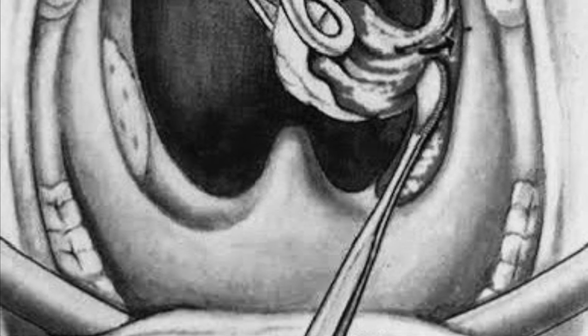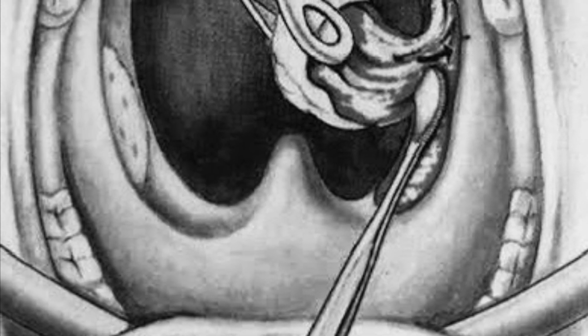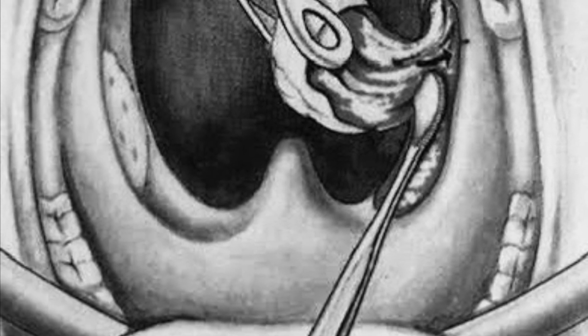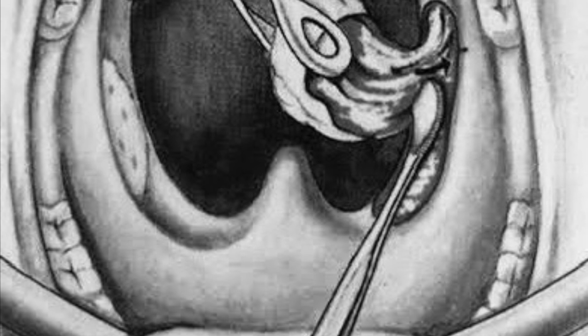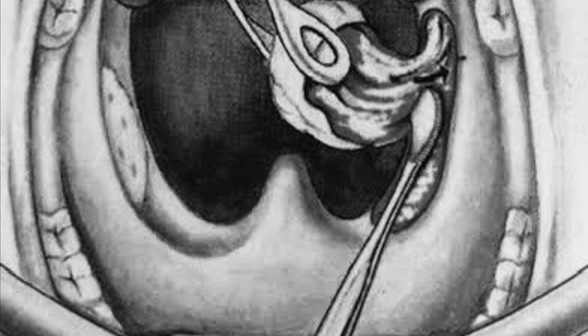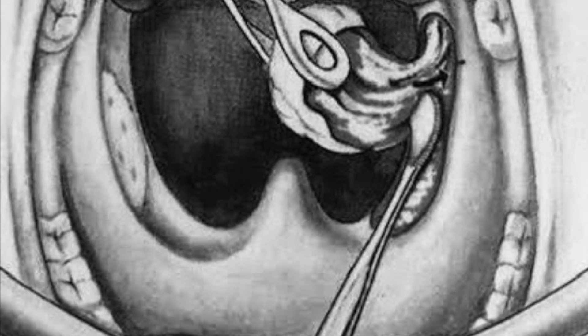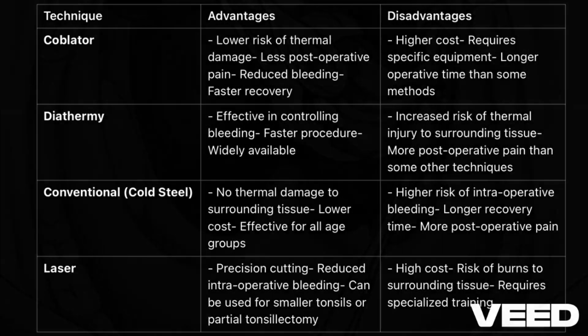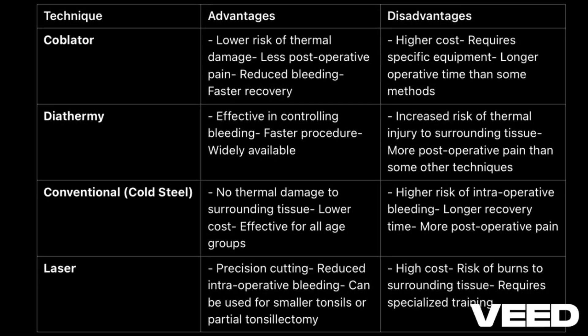Cold steel tonsillectomy, or traditional tonsillectomy, involves manually removing the tonsils with a scalpel or scissors, followed by suturing or packing. This technique generally has low postoperative pain due to reduced thermal injury, and it is cost-effective. However, it tends to result in more intraoperative bleeding, which can make surgery longer and may require additional measures for bleeding control.